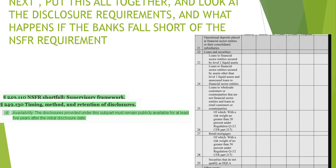They've added a couple of new sections: 249.110, the NSFR Shortfall Supervisory Framework — what happens if you don't reach 1.0 — and then the timing, method, and retention of disclosures. Availability disclosures provided under the subpart must remain publicly available for at least five years. This is also a snippet of the new disclosure form that will be shown in the next video, covering some of the things that must be reported. This is all new.